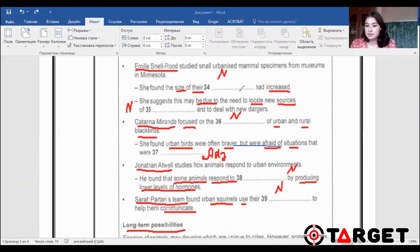Question 34, she found the size of their something had increased. Size, increased, this is the keyword that I need. Question 35, she suggests this may be due to the need to locate new sources of something. Again, noun, and to deal with new dangers. Due to locate sources, these are my words that may be paraphrased. Katarina Miranda focused on the something of urban and rural blackbirds. A lot of words: Katarina focused on urban rural blackbirds. She found urban birds were often braver, but were afraid of situations that were, so we're going to put here adjective. And the keywords: urban birds, brave, but afraid of situation. What kind of situations exactly.